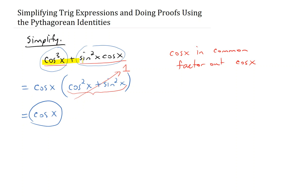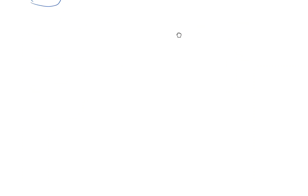So this nasty trigonometric expression simplifies down to just cosine of x when you apply factoring with the Pythagorean identity. Let's try some proofs now.